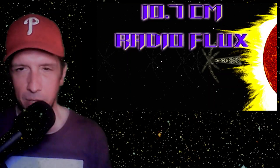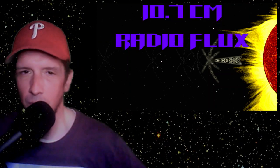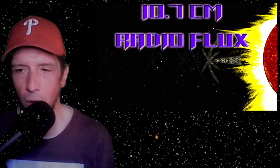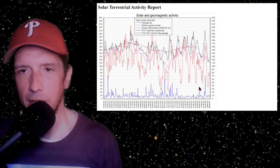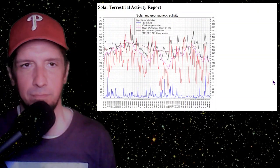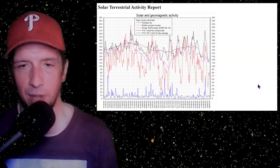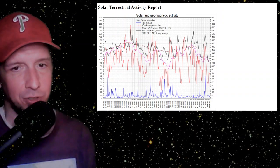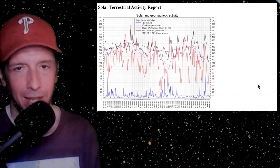The 10.7 centimeter radio flux now at 124 solar flux units. There is the one-year graph of the radio flux represented by the black line, courtesy of Solon.info. Solon.info/solar if you want to look at it yourself.